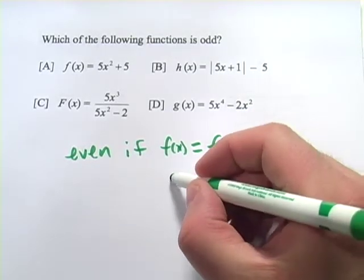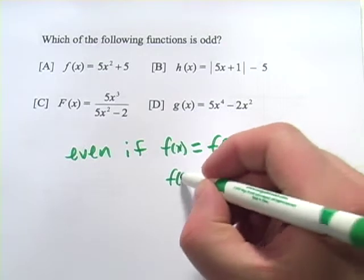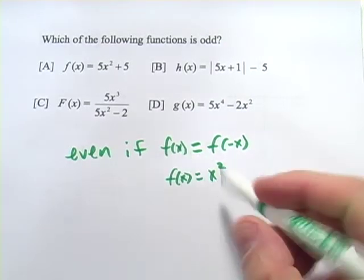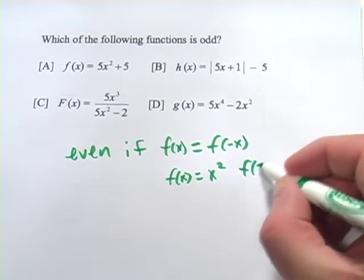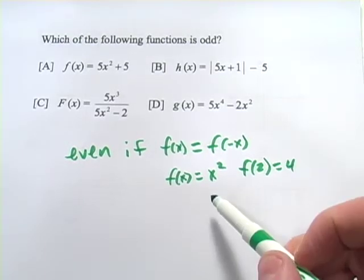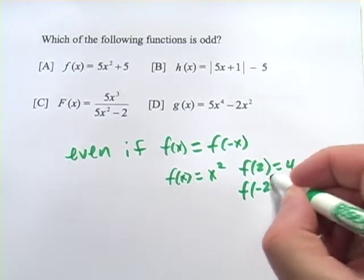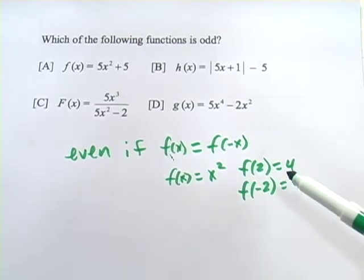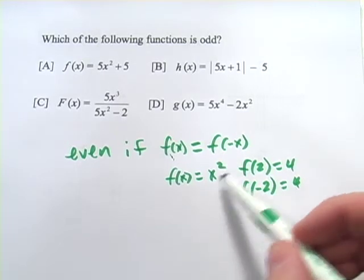Let me show you an example. If I have f of x equals x squared, if I put in a 2, f of 2 equals 4. If I put in a negative 2, that equals 4. So the function equals f of negative x. So that's an even function.